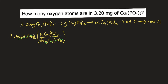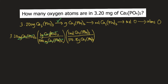Next is to convert grams of calcium phosphate to moles of calcium phosphate. We need the molar mass to do this conversion. The molar mass of calcium phosphate: 1 mole of calcium phosphate weighs 310.18 g. So grams of calcium phosphate would cancel, and we have moles of calcium phosphate.